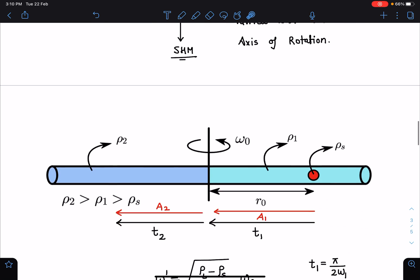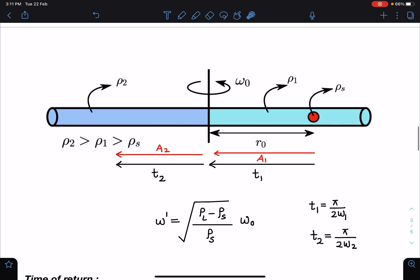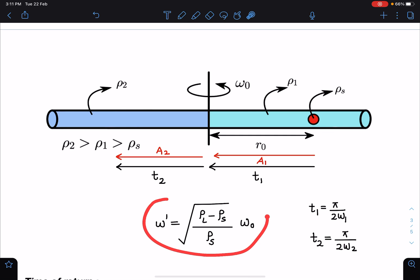Now we can see here, let's say if time taken by this ball from here to here is t1 and it crosses other side because it is accelerating. The moment it will cross this point, now it will start decelerating and will reach somewhere here. Let's say these distances are r0 and the other side it is a2, and corresponding times are t1 from here to here and t2 from here to here. So omega of SHM I can write here in terms of omega of axis, that is root of rho l minus rho s by rho s times omega 0.